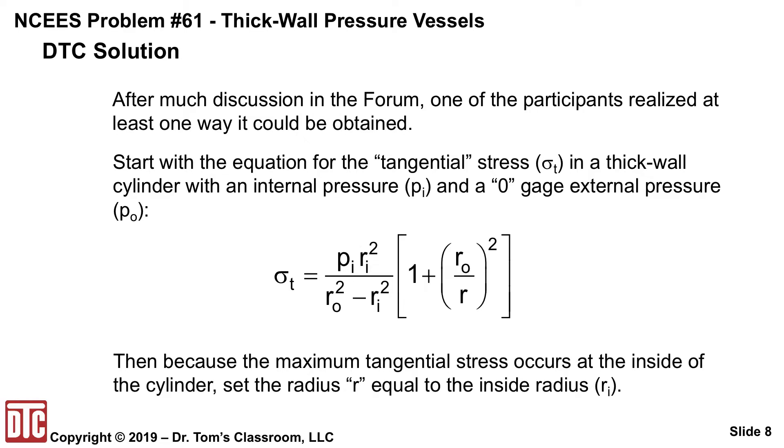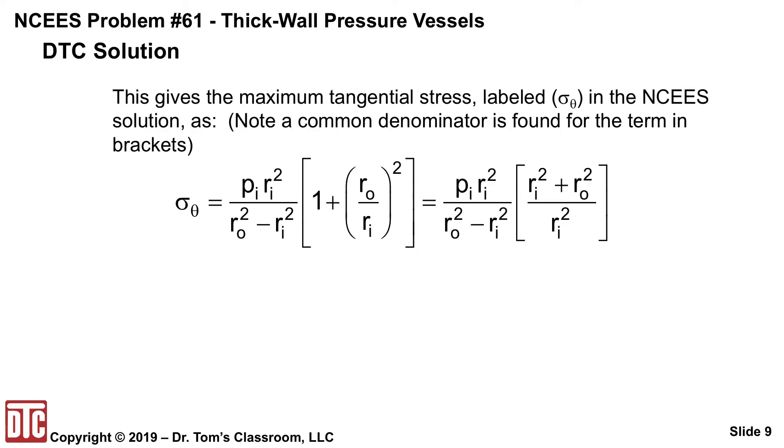However, because we're looking for the maximum tangential stress, and it occurs on the inside of the cylinder, we're going to set that R equal to the inside radius R sub I. This gives the maximum stress. We're going to label it now instead of sigma sub T, sigma sub theta, which is what it is in the NCEES solution. And we're going to get a common denominator for the term in the brackets. So the one plus Ro over Ri quantity squared is going to become Ri squared plus Ro squared divided by Ri squared.